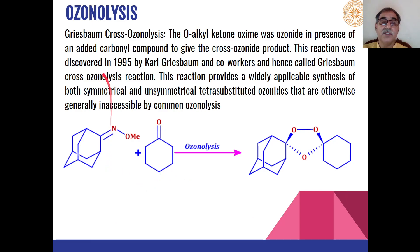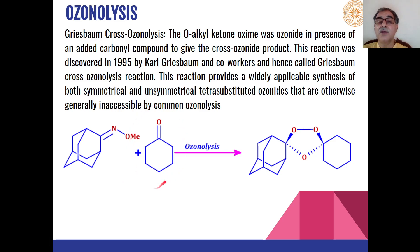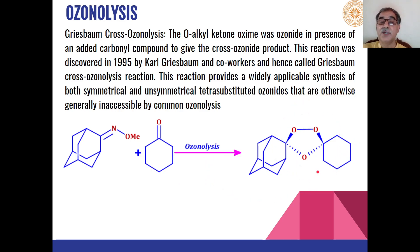Another reaction is the Griesbaum cross ozonolysis, where O-alkyl ketone oximes are used. In the case of adamantanone oxime, when this is reacted with cyclohexanone, ozonolysis gives a specific type of ozonoid as the product. This is called cross ozonolysis because two different reactants are combined.